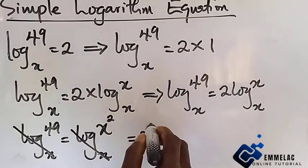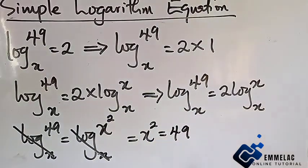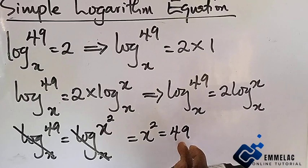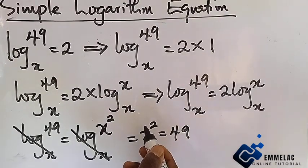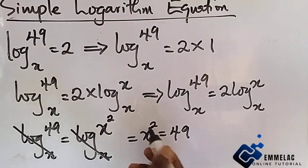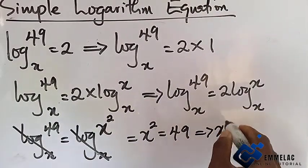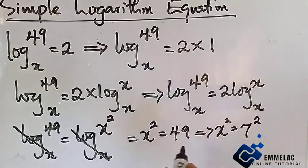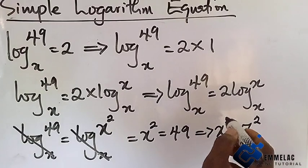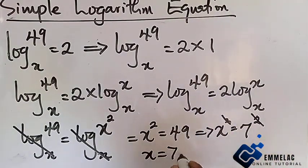We are now left with x raised to power 2 equals 49. Now what we need to do is change this to a particular base that will give you the same power as that of x. This implies that x² equals 7². The powers cancel, so x equals 7. You can see how simple it is.